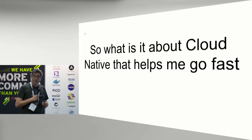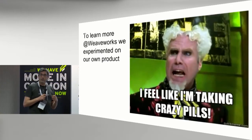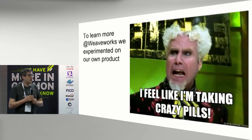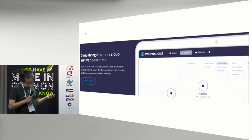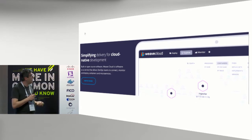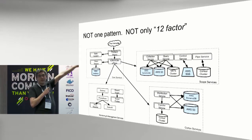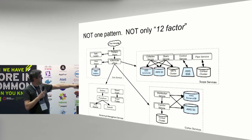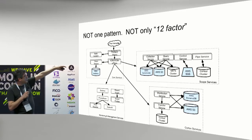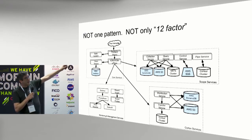So what is it about cloud native that helps me go fast? We decided to conduct an experiment on our own company and build our product this way. Our product simplifies delivery for cloud native apps with features like monitoring and continuous deployment. Here's an old picture of our architecture — it's somewhat complex because it's providing multiple different services to end users: core services, visualization, data storage, and monitoring and management.